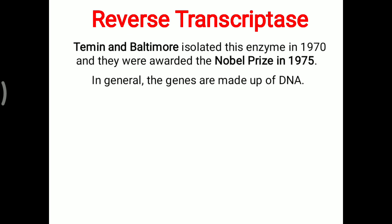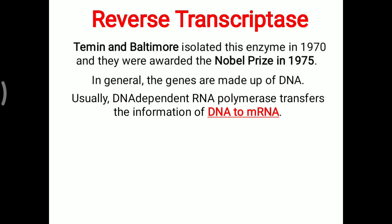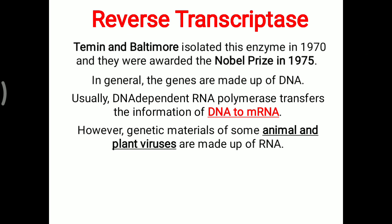In general, genes are made up of DNA — basically genes are present on the DNA. Usually, DNA-dependent RNA polymerase transfers the information of DNA to mRNA. However, the genetic materials of some animal and plant viruses are made up of RNA. So in our body most genetic information is in the form of DNA, but sometimes in plants and animals it is made up of RNA.